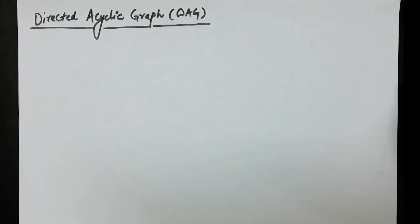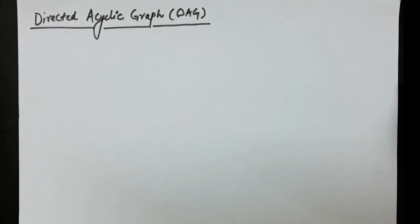Hello everyone. In this lecture, we will discuss directed acyclic graphs. Directed acyclic graphs are a useful data structure for implementing the transformation of basic blocks of three address codes. We have the three address codes, and you should understand the sequence of how we have actually reached the directed acyclic graph.